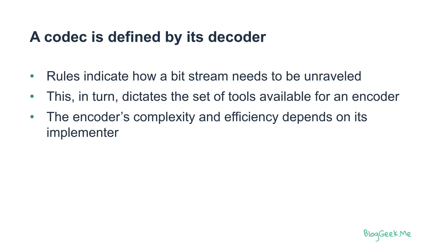A very important thing is that a codec is usually defined by the decoder, not by the encoder. A codec is simply a set of rules that states what you need to do when you see a certain kind of bitstream — how to unravel that bitstream and how to decode it. This in turn dictates the set of tools available for the encoder. The encoder is a bag of different tools, and it needs to decide which tool to use and when. The encoder's complexity and efficiency depend on the implementer — the one who has written that encoder — because different encoders of the same codec can produce different results.